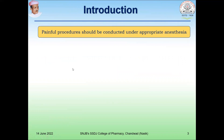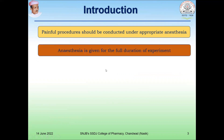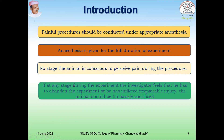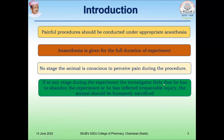Some important points must be considered when using anesthetic agents. All painful procedures should be conducted under appropriate anesthetic agents. Anesthesia should be given for the full duration of the experiment so that at no stage is the animal conscious and able to feel pain. If irreparable injury occurs, the animal should be humanely sacrificed, which is called euthanasia.